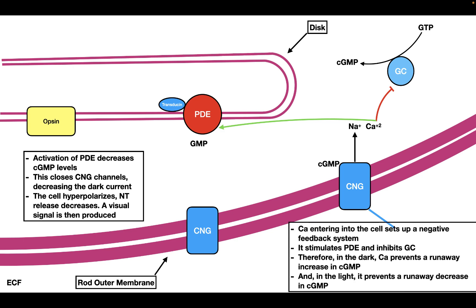This is going to be incredibly important for the cell. Calcium that enters into the cell sets up a negative feedback system — it stimulates phosphodiesterase and inhibits guanylate cyclase. So when the rod is in the dark, you have the CNG channels open, allowing sodium and calcium into the cell. The calcium inhibits guanylate cyclase and stimulates phosphodiesterase, which basically prevents a runaway increase in cyclic GMP, allowing the cell to respond to light. During the light, the CNG channels start to close, decreasing the amount of calcium. This stimulates guanylate cyclase and inhibits phosphodiesterase, causing cyclic GMP levels to build up, which prevents a runaway decrease in cyclic GMP and allows the cell to respond to dark.